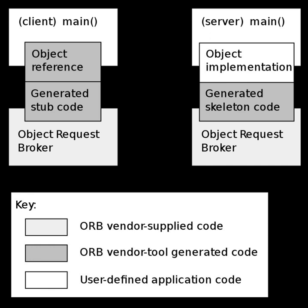CORBA's notion of location transparency has been criticized — that is, objects residing in the same address space and accessible with a simple function call are treated the same as objects residing elsewhere, in different processes on the same machine, or on different machines. This is a fundamental design flaw, as it makes all object access as complex as the most complex case, i.e., a remote network call with a wide class of failures that are not possible in local calls. It also hides the inescapable differences between the two classes, making it impossible for applications to select an appropriate use strategy.